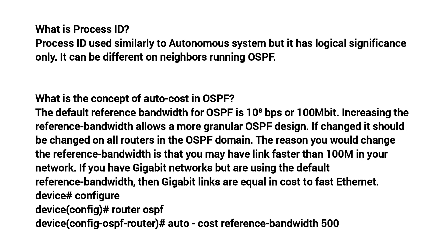The OSPF process ID has logical significance only and can be different on neighboring routers running OSPF. The default reference bandwidth for OSPF auto cost is 10^8 bps, or 100 megabits. Increasing the reference bandwidth allows a more granular OSPF design, but if changed it should be changed on all routers in the OSPF domain. For example, if you have gigabit networks but use the default reference bandwidth, then gigabit links are equal in cost to Fast Ethernet. The reference bandwidth can be changed using the command: router ospf [id] → auto-cost reference-bandwidth [value].